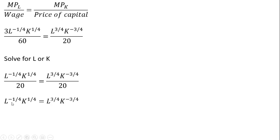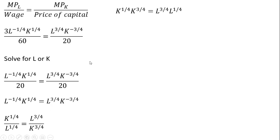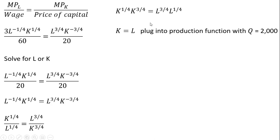Following the rules of exponents, I bring L to the minus one-fourth down into the denominator, and likewise K to the minus three-fourths becomes 1 over K to the three-fourths. Then cross-multiplying — multiplying through by K to the three-fourths and then by L to the one-fourth — we gather the K and L terms. Adding up the exponents: one-fourth plus three-fourths gives K to the one power, and three-fourths plus one-fourth gives L to the one power. Our result is K equals L.